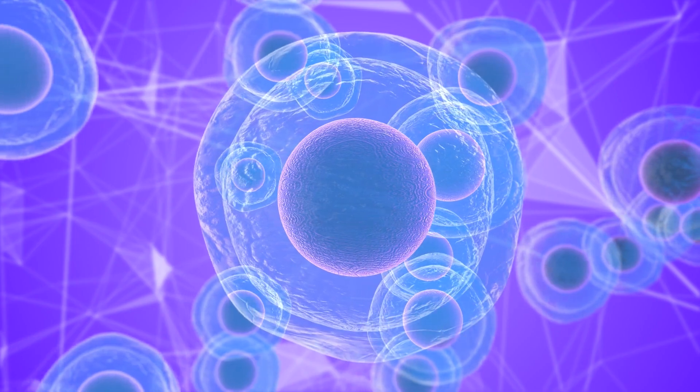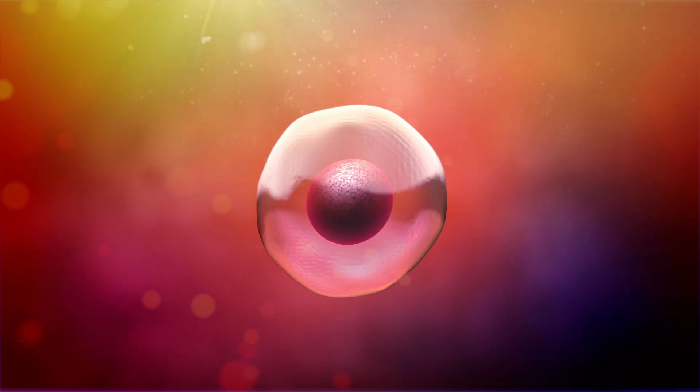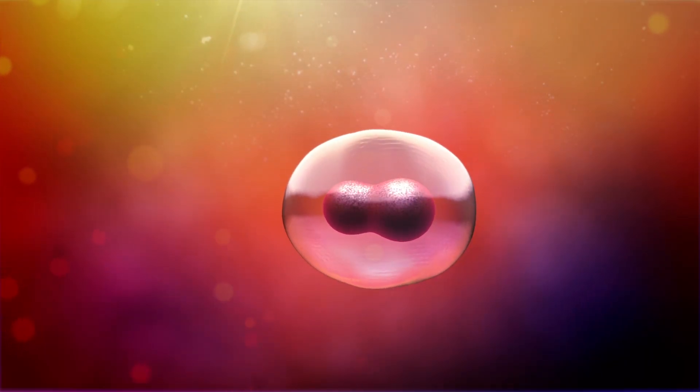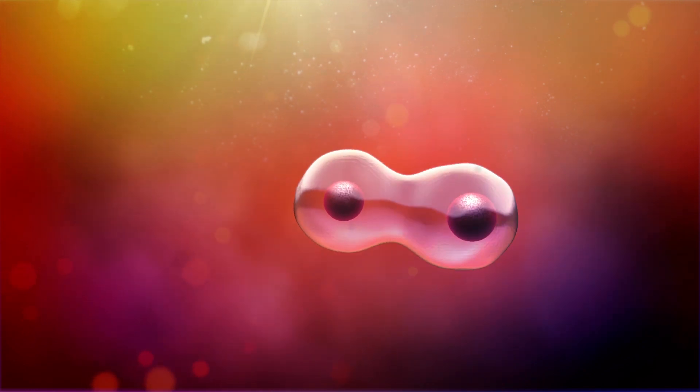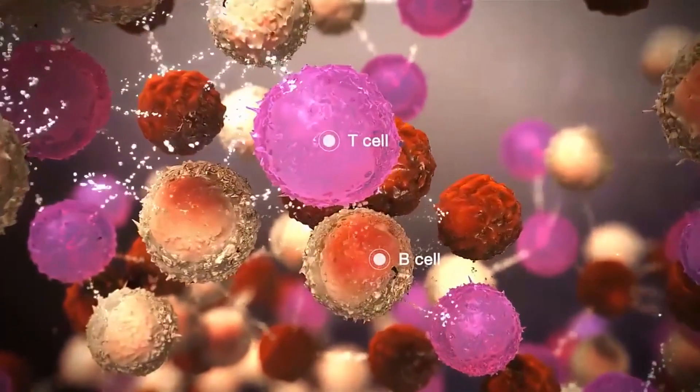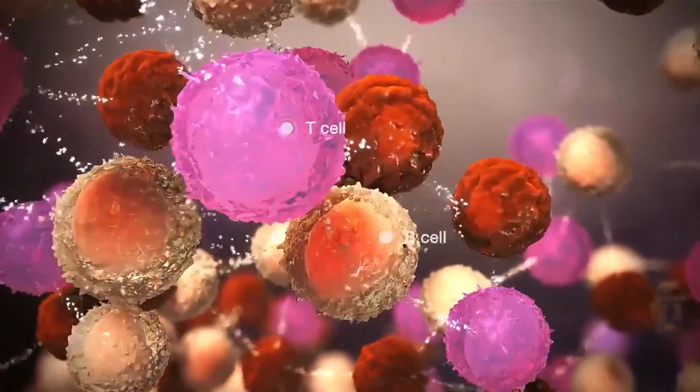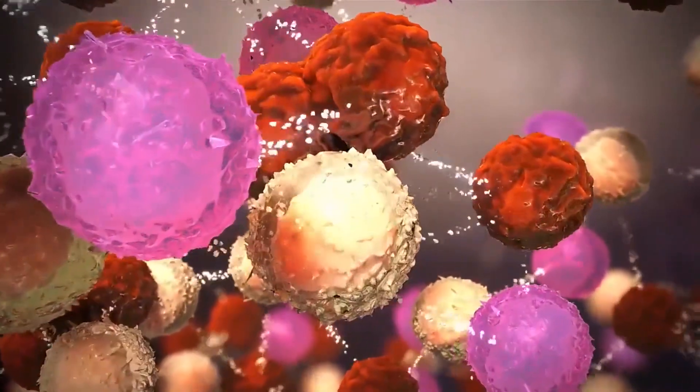Some of the stem cells will become a type of immune system cell called a lymphocyte. Two types of lymphocytes comprise the adaptive immune system: B cells and T cells. B cells mature in the bone marrow, hence the name B cell.